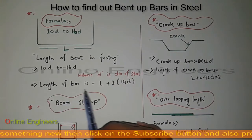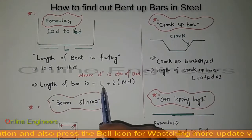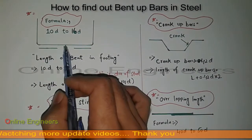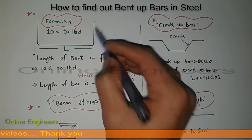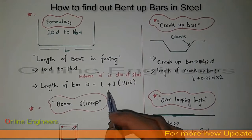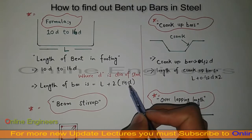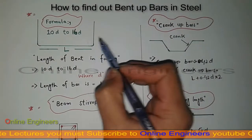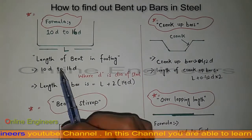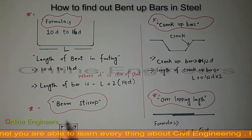Now I want to find out the length of the whole bar. L is the total length of this bar — one part is this, the other one is this, and the third one is this. Then add 2 multiplied by 14d — one 14d for this end and one for the other end. Multiplying by 2 will give you the total length for this one bar.